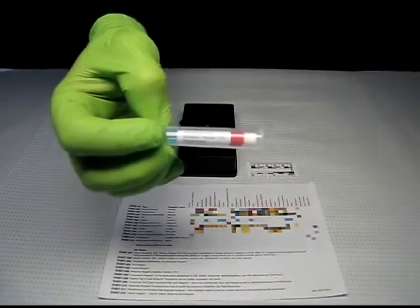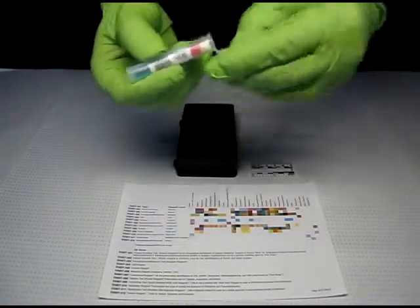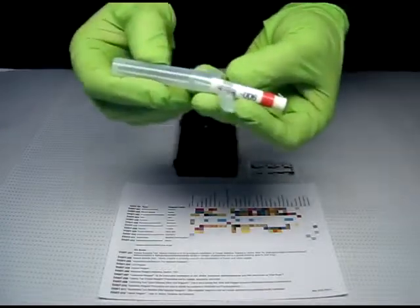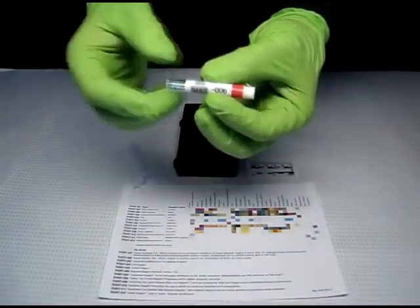Here we are demonstrating the DABIT 006 Marijuana Test. Remove the sampler from the clear outer tube. Remove the protective paper from the sticky sampler tip.